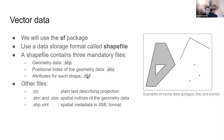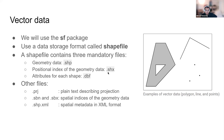Each file within the shapefile folder has a specific function. The .shp file contains the geometry data — on the right-hand side we can see an example of vector data showing polygons, lines, and points. The .shx file contains the positional index of the geometry data.